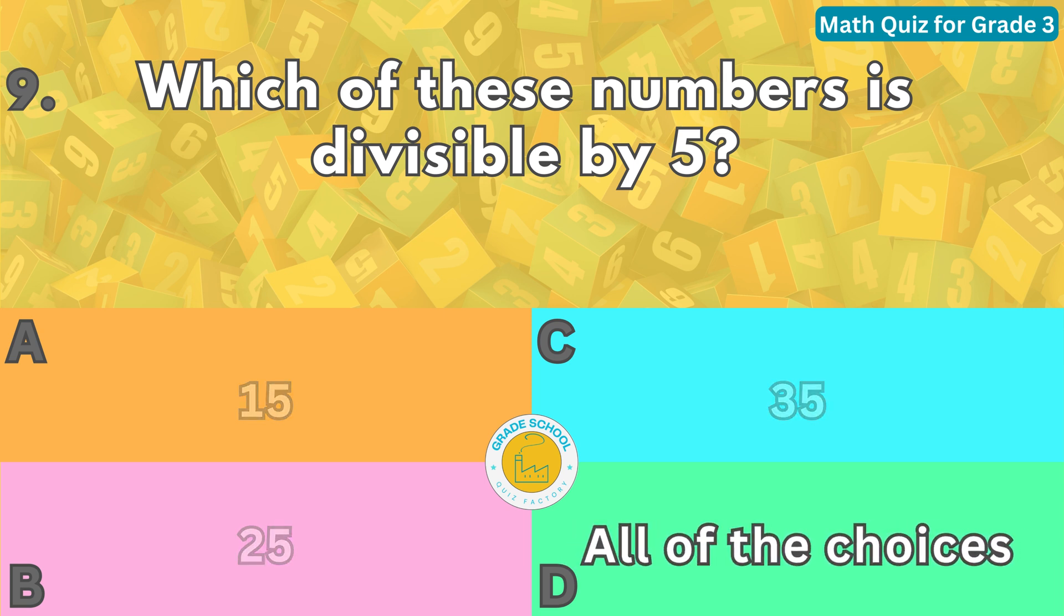A number is divisible by five if the last digit of the number is either zero or five. For example, 15 is divisible by five because the last digit is five. Similarly, 25 and 35 are divisible by five because the last digits are five. All of these numbers are divisible by five.